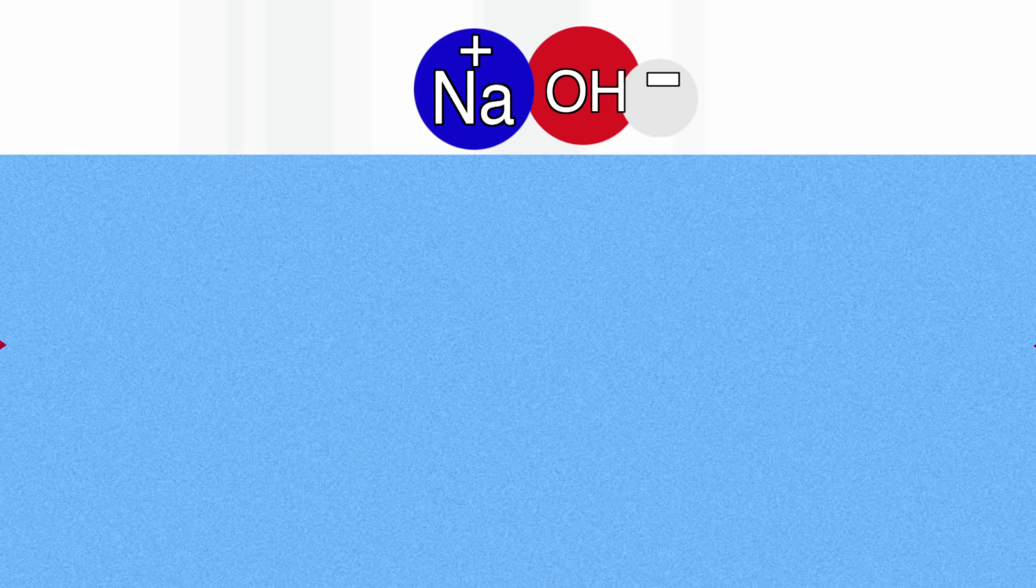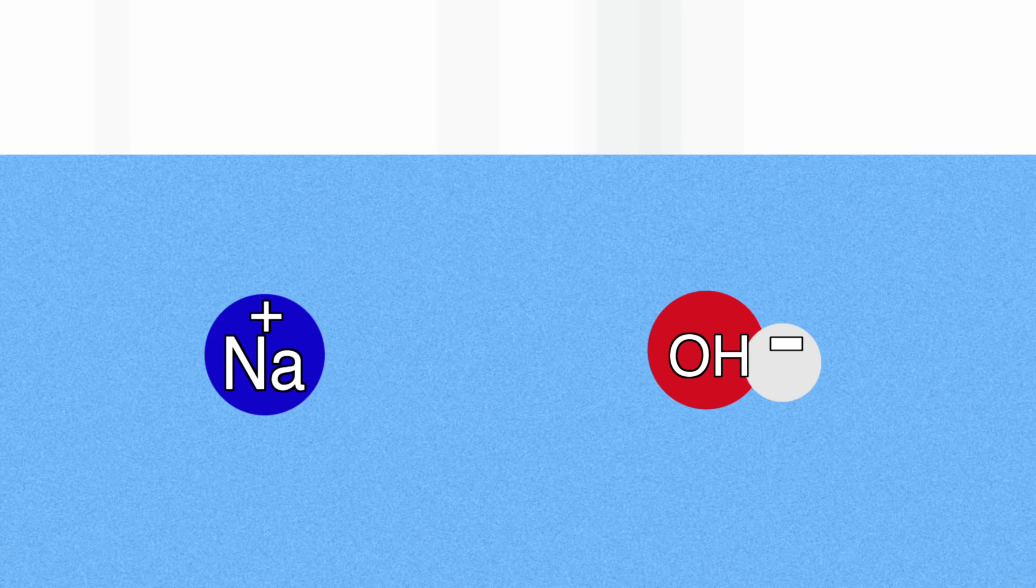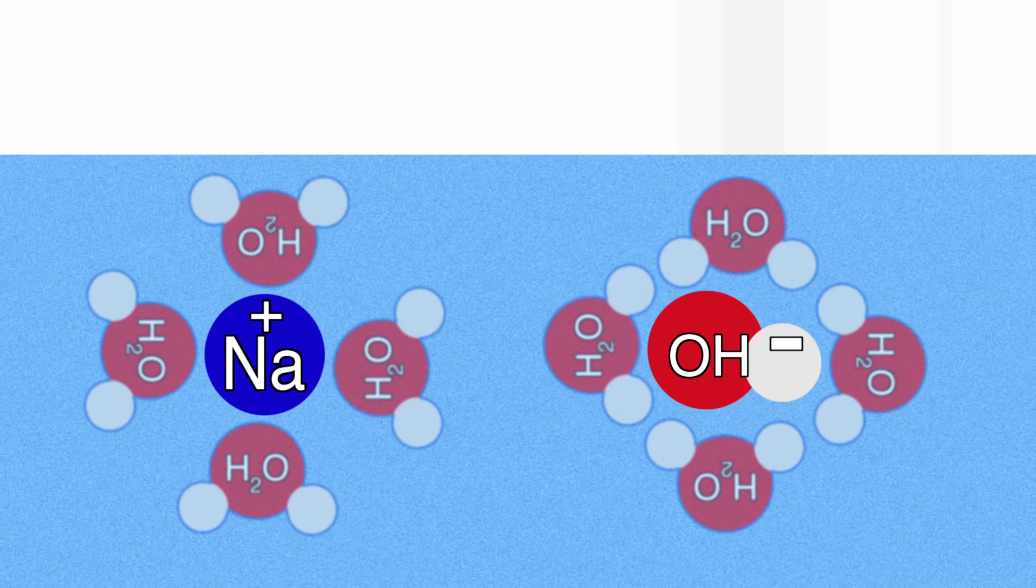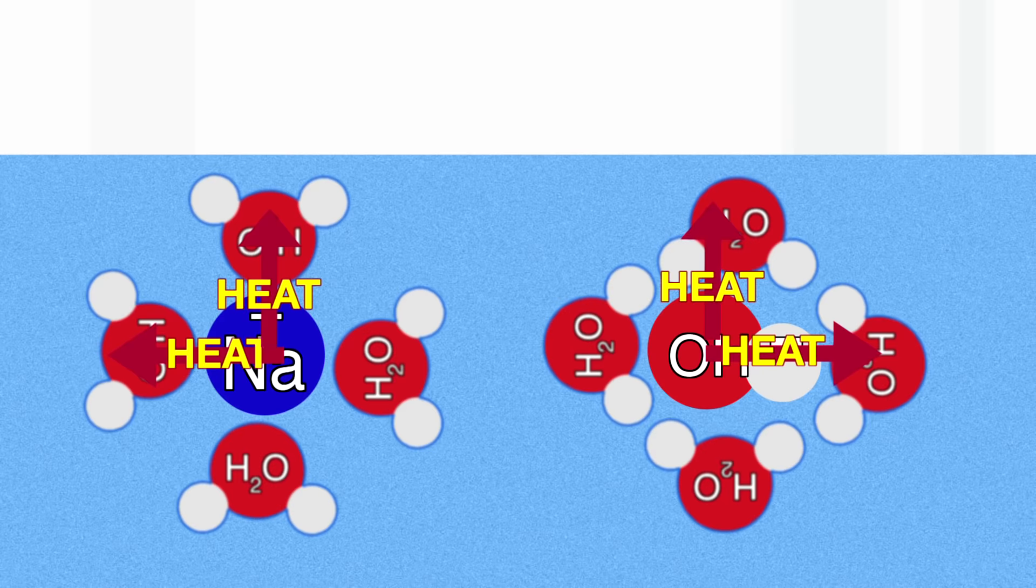However, because these ions are small, they interact with the water. And the water molecules interacting with both the positive ions and the negative ions give out heat. In the case of alkali metal hydroxides, the energy that you get from the water interacting with the ions is more than the energy that you need to pull those ions apart. So overall, dissolving hydroxides generates heat.